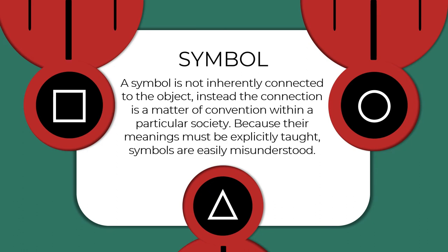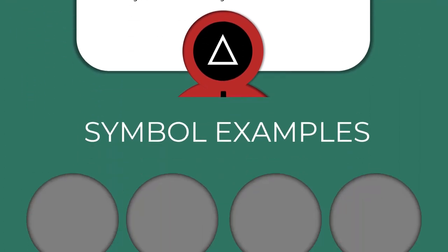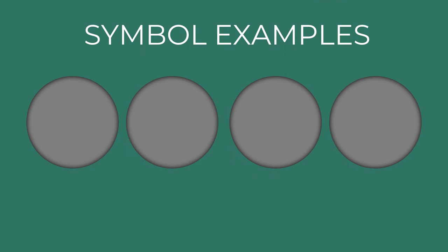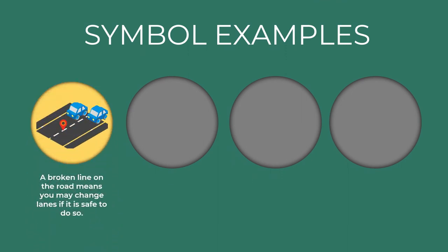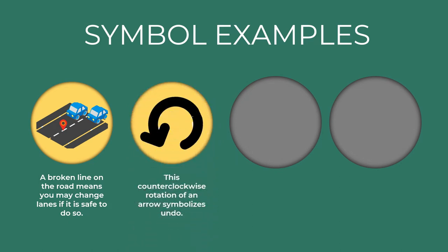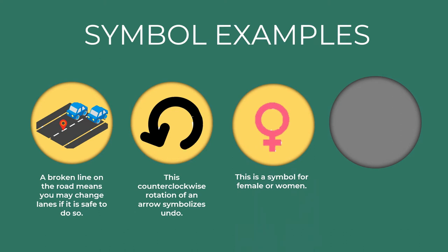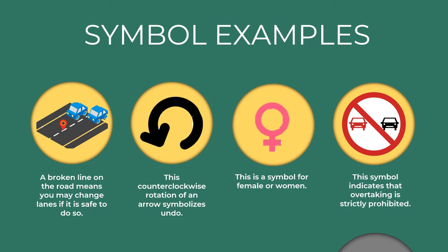A symbol is not inherently connected to the object. Instead, the connection is a matter of convention within a particular society. Because their meanings must be explicitly taught, symbols are easily misunderstood. For example, a broken line on the road means you may change lanes if it is safe to do so. A counterclockwise rotation arrow is a symbol for undo. This is a symbol for female or women. And this symbol indicates that overtaking is strictly prohibited.